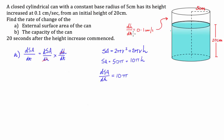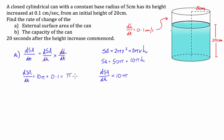We know that DH/DT is 0.1, so we can compute DSA/DT as the derivative of surface area with respect to height — which we just computed to be 10π — multiplied by 0.1. That's like saying 10π divided by 10, which equals just π. We make sure to put our units in: centimetres squared per second.